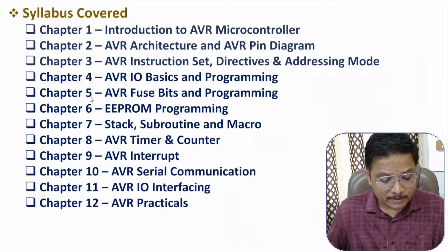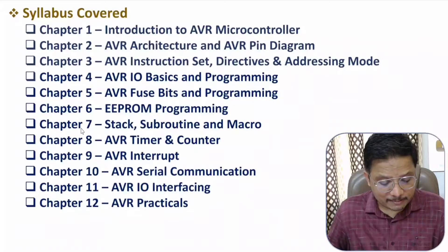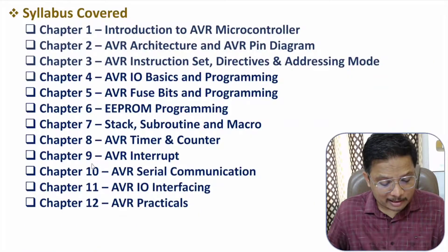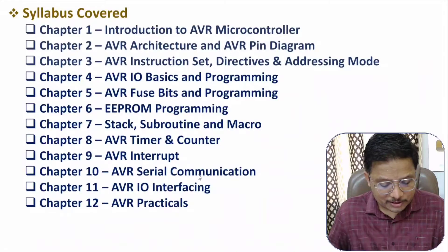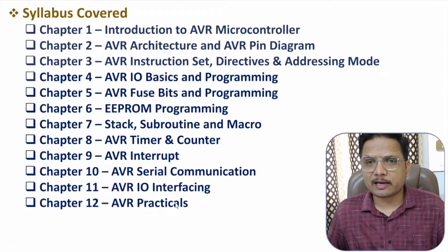The third chapter includes AVR instruction set, directives, and addressing modes. The fourth chapter is based on AVR I/O basics and programming. The fifth chapter includes AVR fuse bits and programming. The sixth chapter is based on EEPROM programming of AVR. The seventh chapter covers stack, subroutine, and macro. The eighth chapter is AVR timer and counter. The ninth chapter includes AVR interrupt. The tenth chapter is based on AVR serial communication, the eleventh on AVR I/O interfacing, and the twelfth on AVR practicals.